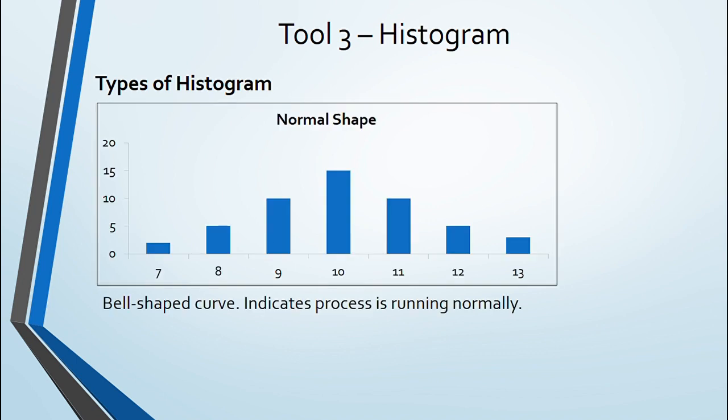So, based upon how histogram looks they are given various names and each one indicate process behavior. Firstly, normal shape bell curve. It indicates process is running normally close to mean.